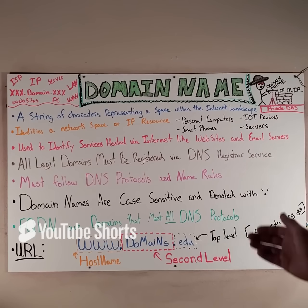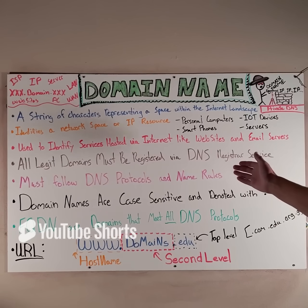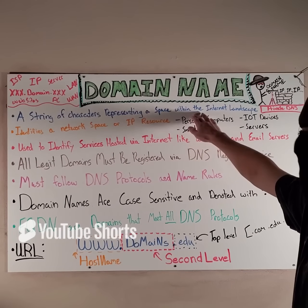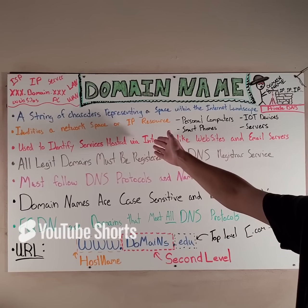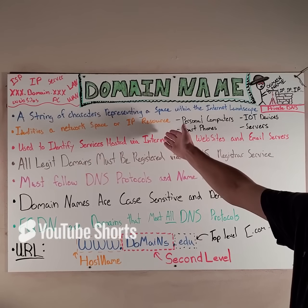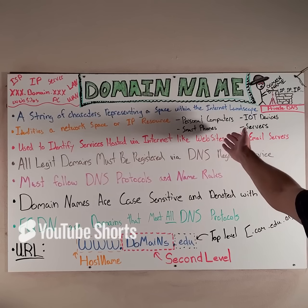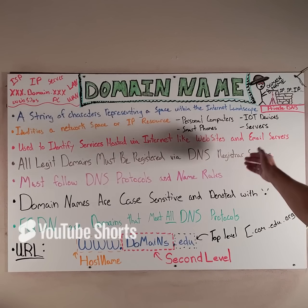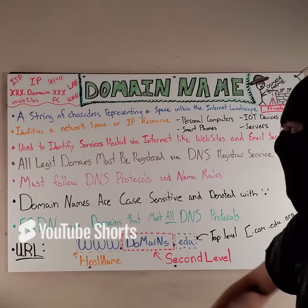A domain name is basically a string of characters representing a space within the internet landscape. It identifies a network space or an IP resource — things like personal computers, servers, IoT devices, smartphones, tablets, and so on.